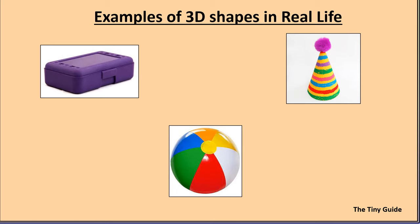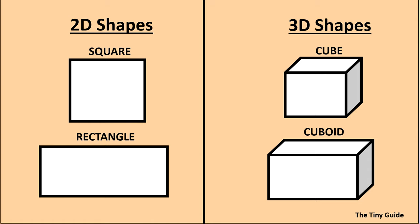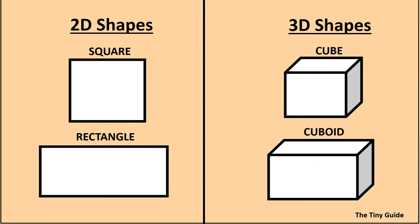Some examples of 3D shapes in real life. Now we can see the difference between 2D and 3D by looking at these pictures. 2D shapes are flat because they have only length and height. 3D shapes have width in addition to length and height. Thank you for watching.